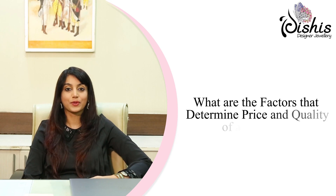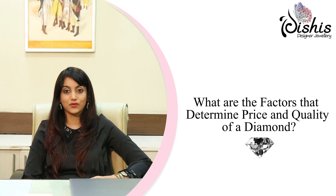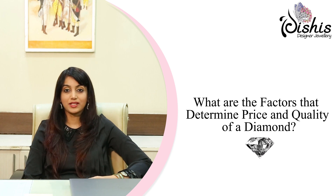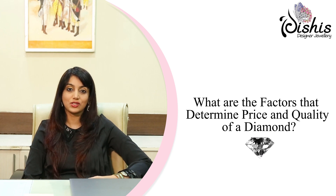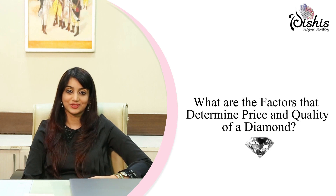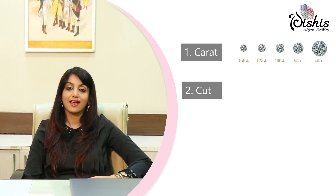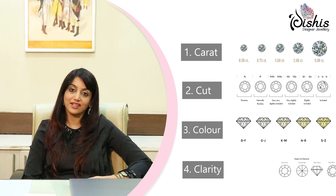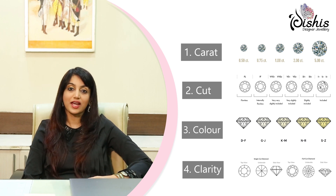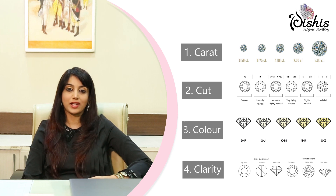What are the factors that determine the price and quality of a diamond? The price and quality of a diamond are determined by a combination of factors known as the four C's: carat weight, cut, color, and clarity. These factors help to assess a diamond's rarity, beauty, and overall value. Here is a brief explanation of each factor.